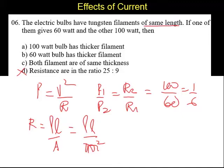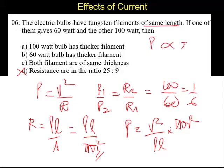Now we have to put thicker filament. Thicker filament depends upon radius. So substituting this to the power relation, power equal to V square by rho L into pi R square. So power is directly depends upon square of the radius. So higher the power, higher will be the thickness.